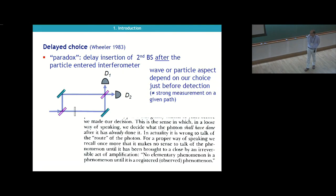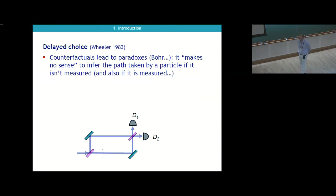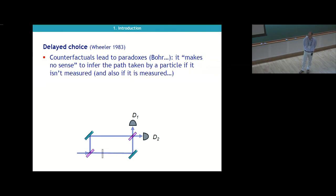Wheeler said the particle or wave aspect will depend on our choice just before detection. The conclusion is that, loosely speaking, we decide what the photon shall have done after it has already done it. Wheeler quoted Bohr: it makes no sense to talk of the phenomenon until it has been brought to a close by an irreversible act of amplification. No elementary phenomenon is a phenomenon until it is a registered, observed phenomenon. The idea is that we should not try to understand what happens in between, because otherwise we will be led to paradoxes.